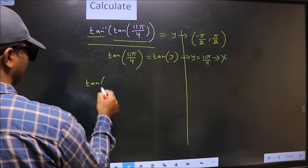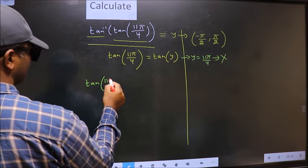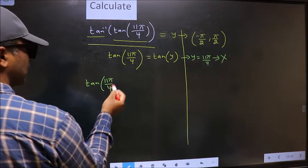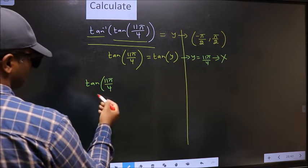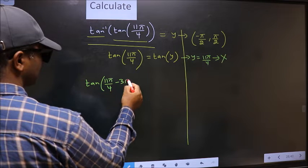Tan 11π by 4 exceeds that interval. So we should decrease it. To decrease I subtract 3π.